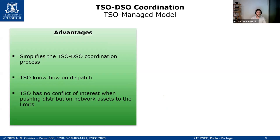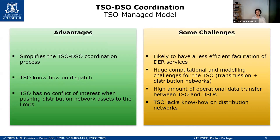There are some advantages to this model. It simplifies the TSO-DSO coordination, and the TSO already has know-how on this — they only need to expand it to the distribution side. The TSO also has no conflict of interest when pushing distribution network assets to their limits, since they don't own those assets. Challenges include less efficient facilitation of DER services because the TSO decides dispatch while the DSO controls voltages and transformer OLTC taps. There is also a huge computation and modeling challenge, a high amount of operational data transfer, and the TSO lacks know-how on distribution networks.